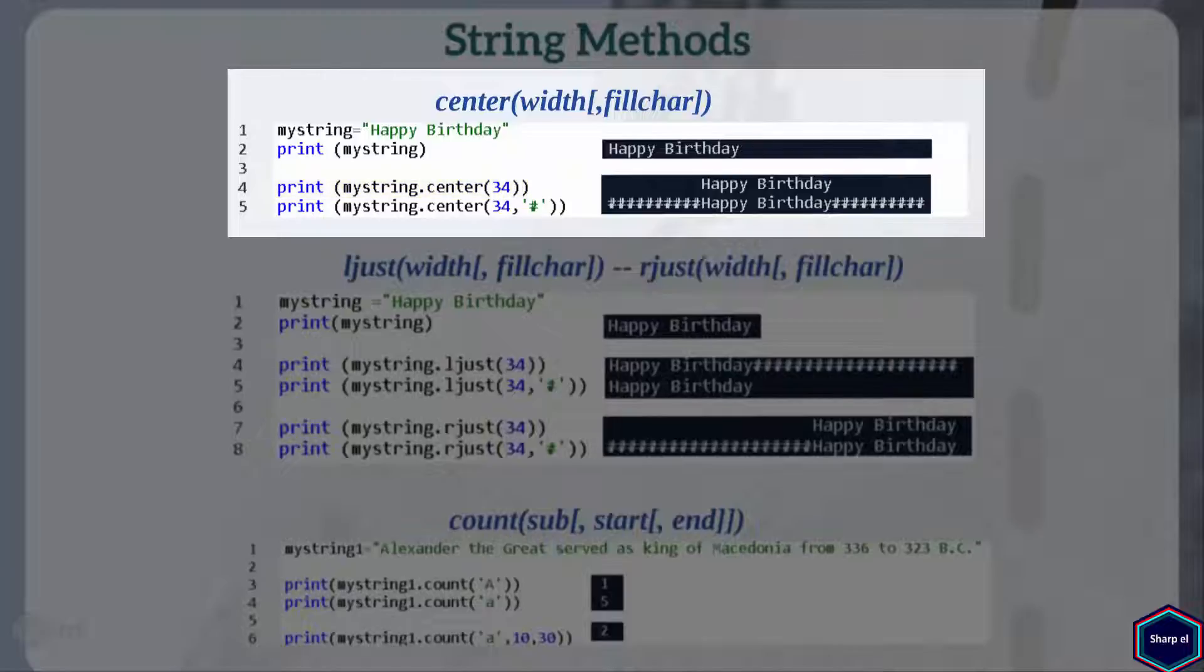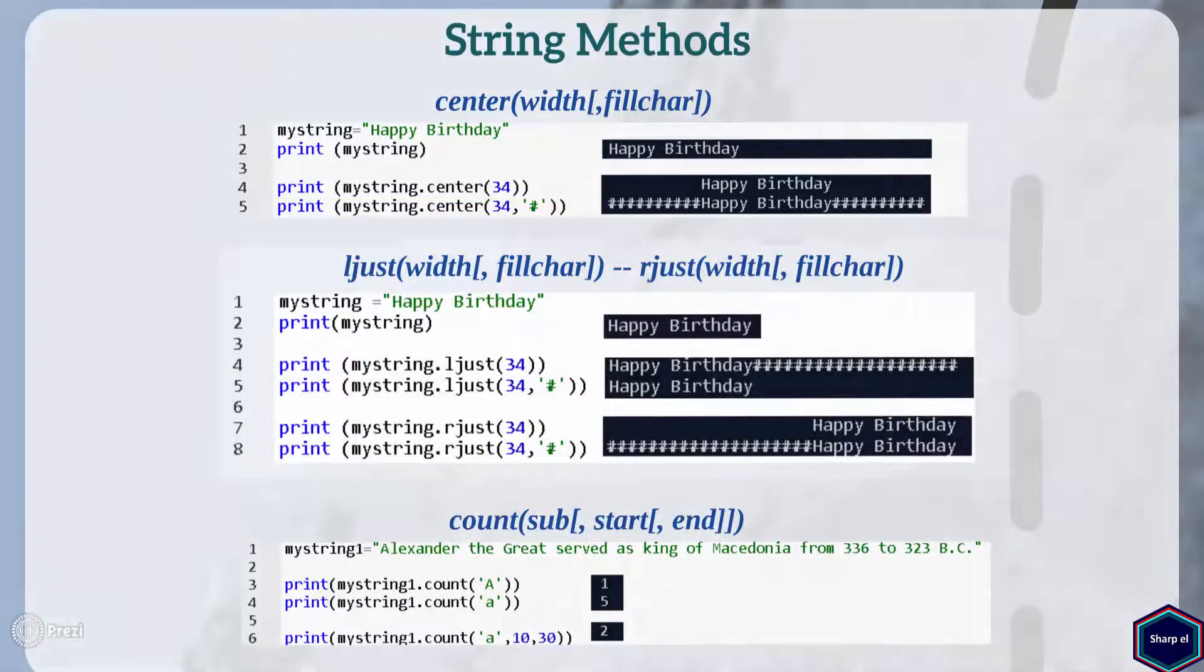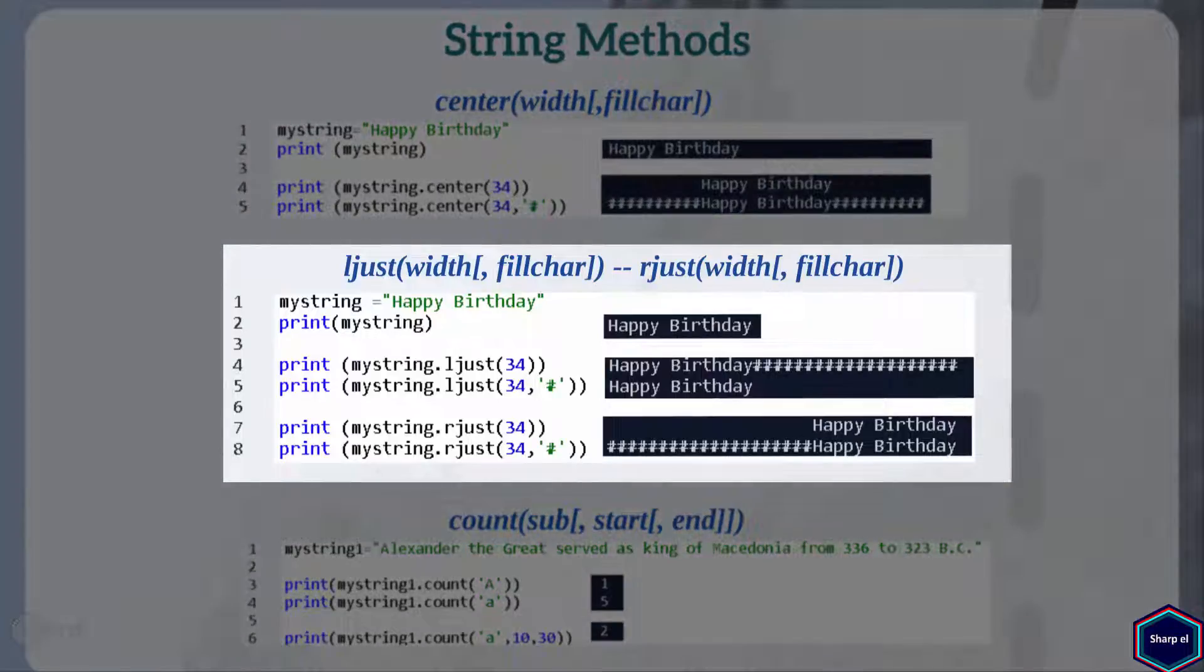Now if I want to have any character instead of empty spaces, I can use the FieldCare argument. Now when I print my string, you can see my string has 10 hash characters on both ends. Ljust and rjust methods are just like Center method, but ljust method aligns the string left and rjust right as shown in these examples.